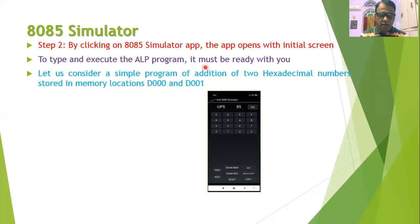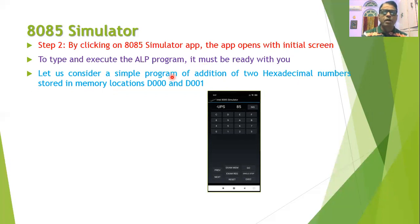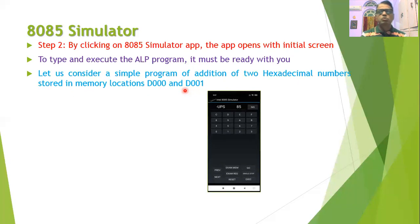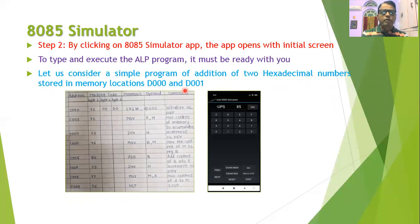Here we will consider one simple ALP program. Suppose we have been given a program where we want to make an addition of two hexadecimal numbers. We will suppose that the first hexadecimal number is stored at location D000 and the second number is stored at location D001. Then we can write the assembly language code or program like this.